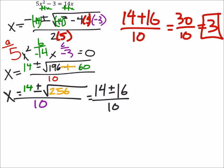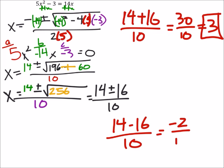That's one of our answers. And then on the other hand, we had 14 - 16 over 10, so that's -2 over 10, which would be -1/5.